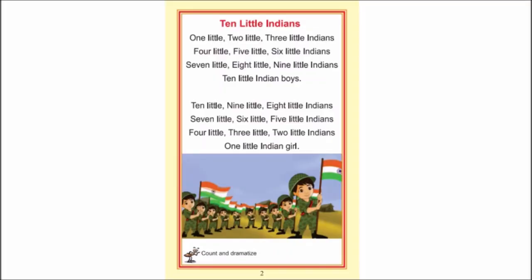Okay children. The page you are seeing is from our book Rhyme Time. Ten Little Indians. So children, repeat with me: One little, two little, three little Indians. Four little, five little, six little Indians. Seven little, eight little, nine little Indians. Seven little, six little, five little Indians. Four little, three little, two little Indians. One little Indian girl.